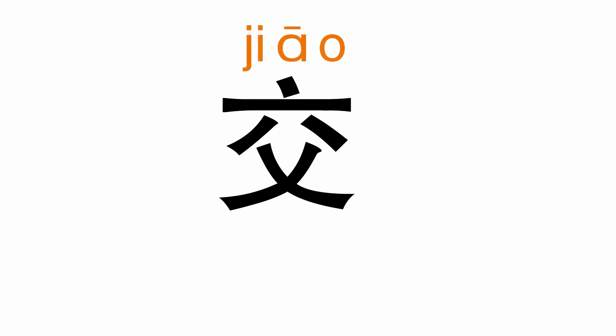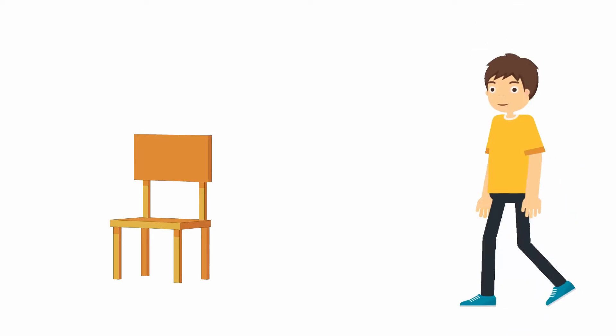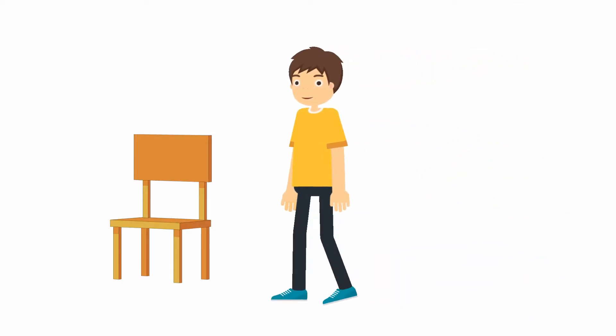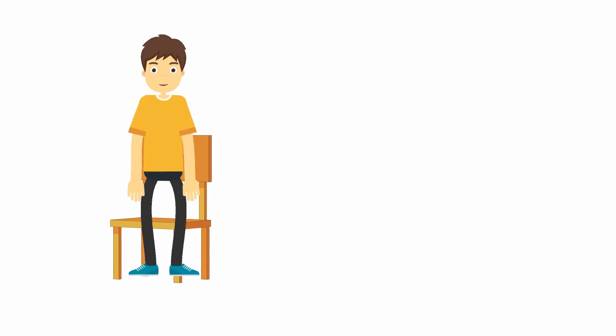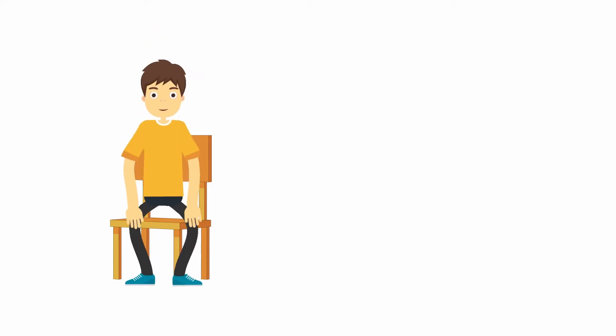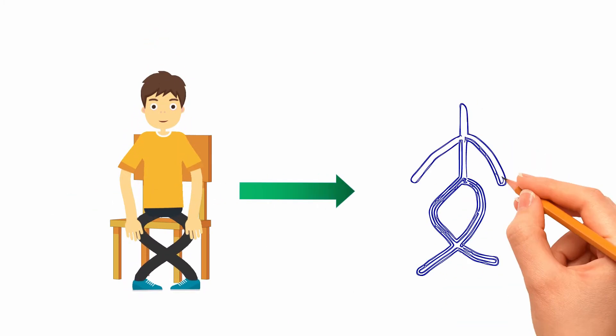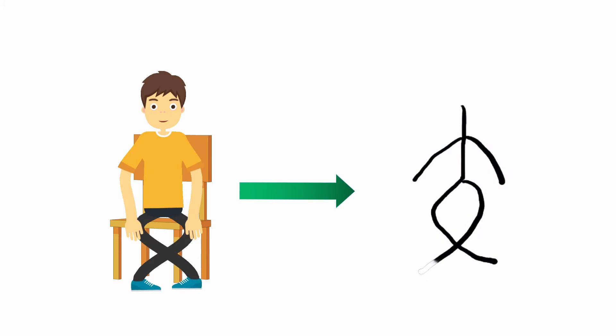Today, let's learn the character Jiao. The character Jiao looks like a person making his two legs crossed. Therefore, it means cross.